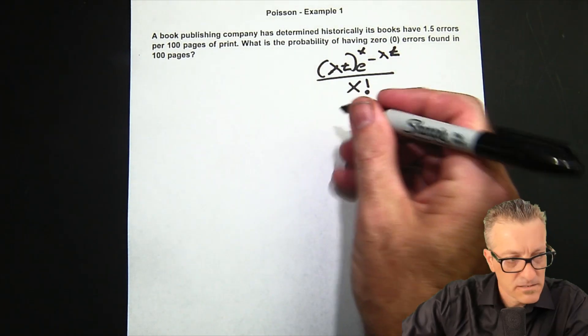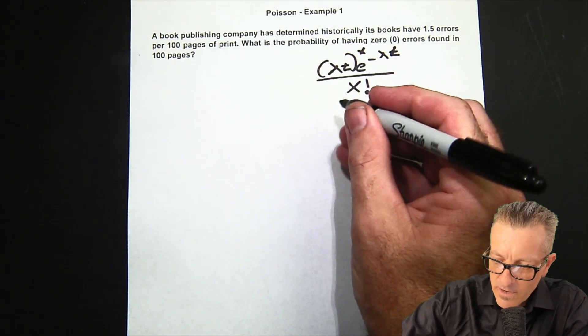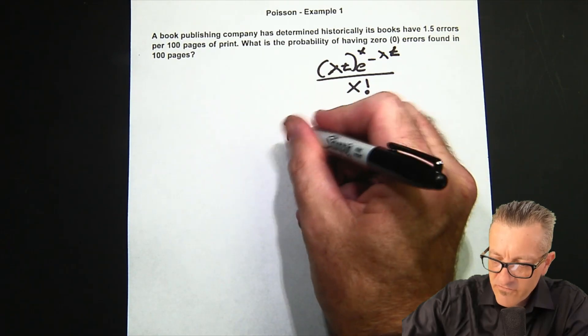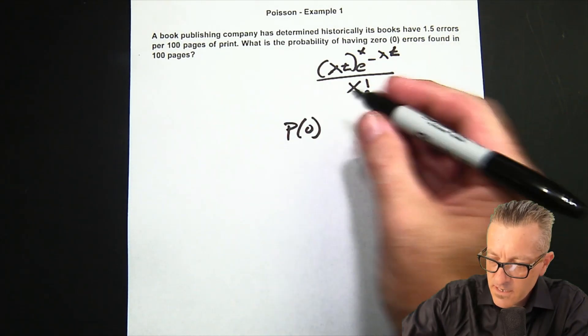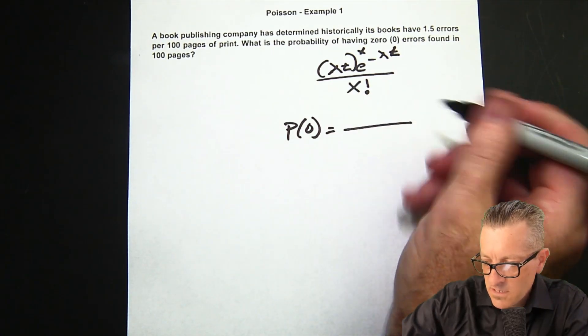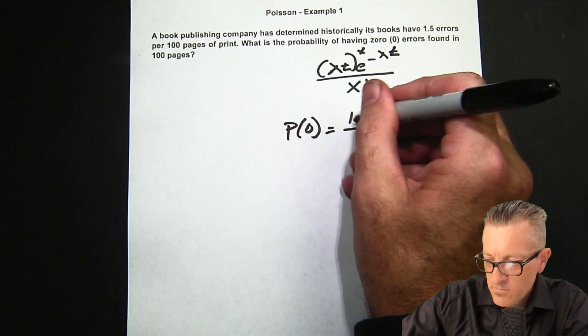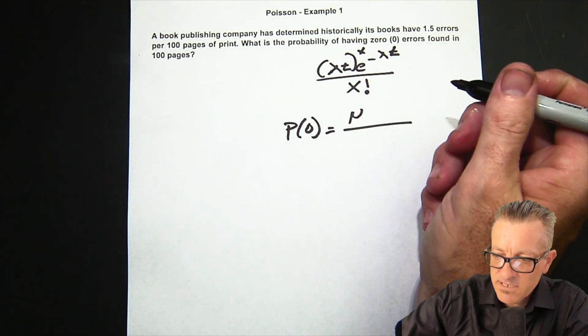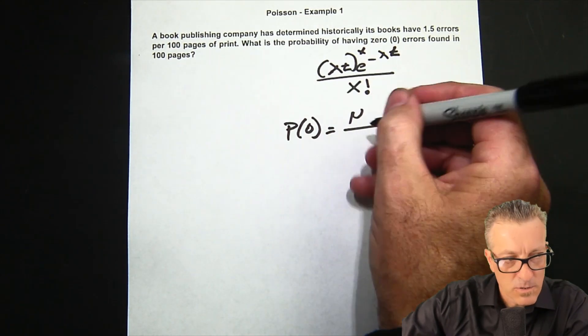The formula that I always use is this: we're looking for zero within our time frame. What I do is I usually have mu, and mu is lambda times T.